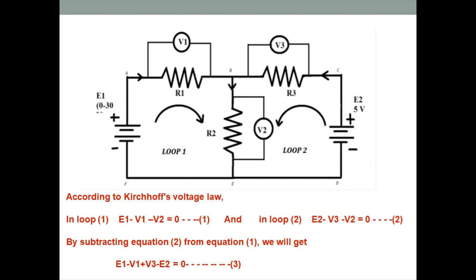For this, you need to measure the voltage across all three resistances R1, R2, and R3. Voltage is always measured in parallel. V1 is the voltage across R1, V2 across R2, and V3 across R3. We will also find E1 and E2 — the battery potentials — in the equations. When you solve this, the final answer will be zero, satisfying all three equations, and Kirchhoff's Voltage Law is proved.